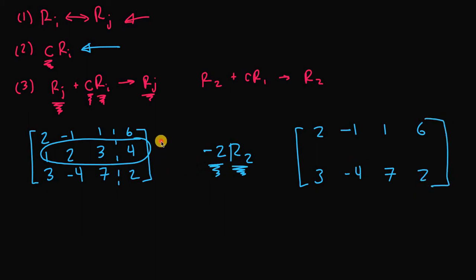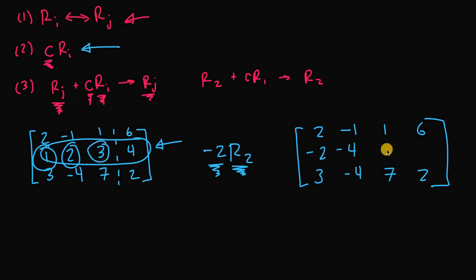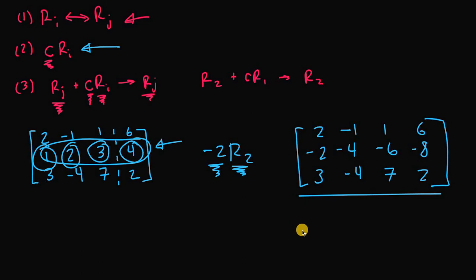Multiplying every element in row two by negative two: 1 × -2 = -2, 2 × -2 = -4, 3 × -2 = -6, 4 × -2 = -8. That gives us the new matrix. Remember, any time we perform an elementary row operation, our matrices represent equivalent systems of linear equations — we're just manipulating rows to obtain new matrices that are equivalent.